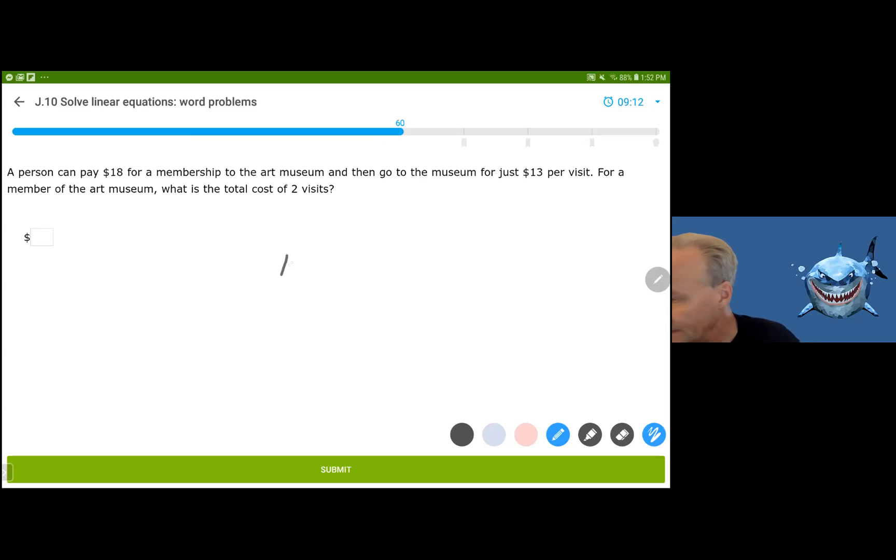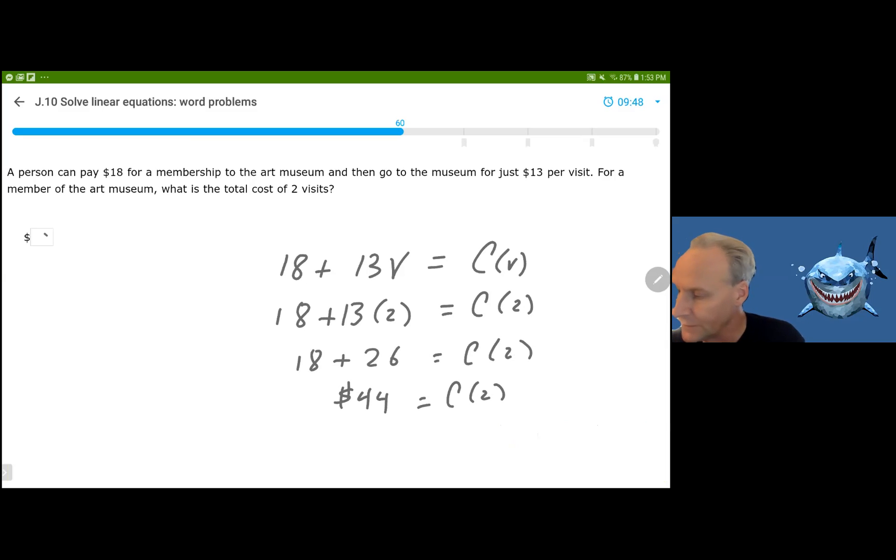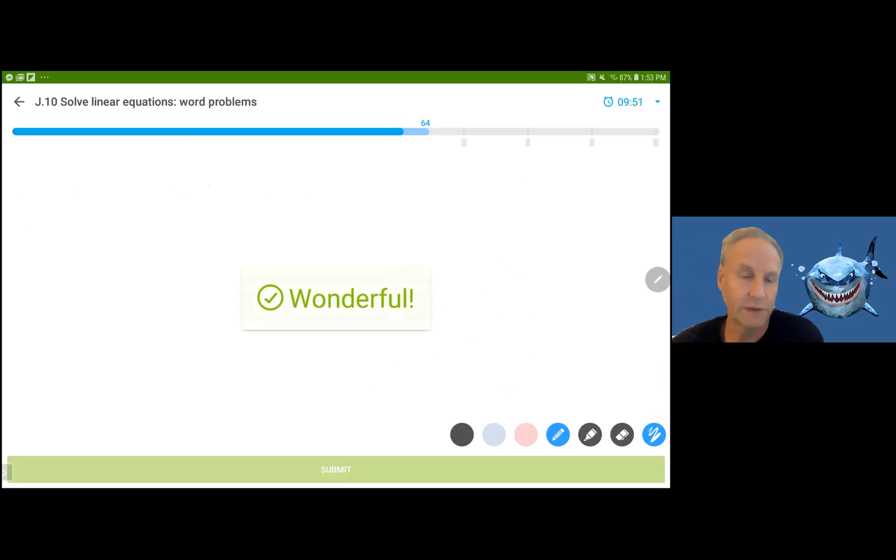A person can pay $18 for a membership to the art museum and then go to the museum for just $13 per visit. That is 18 plus 13 for each visit. This is going to be the cost, depending on the number of visits that he takes. And we wanted to find the total cost of two visits. So we're really looking for C of two. That's how we read that. And we just substitute the two in for the V here. And so it's going to be 18 plus the 26. It's going to be the total cost of two visits, which is 44. I know you guys are probably going to do this much faster than I do. There you have it.